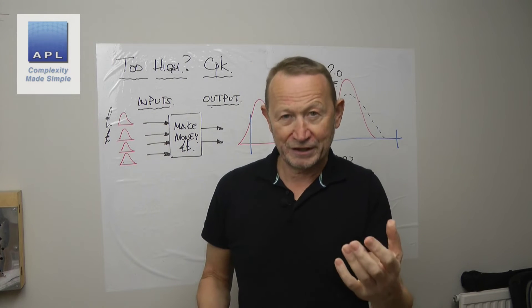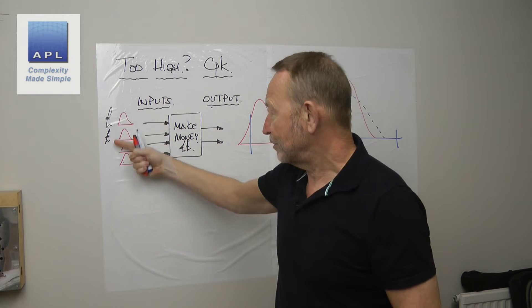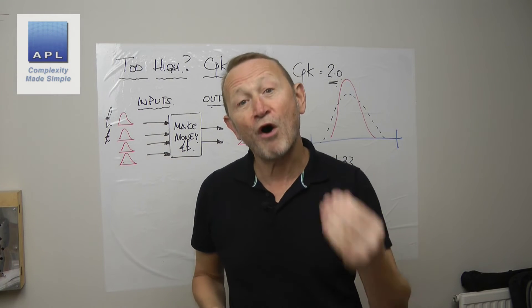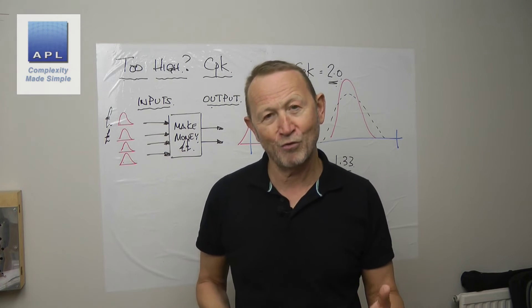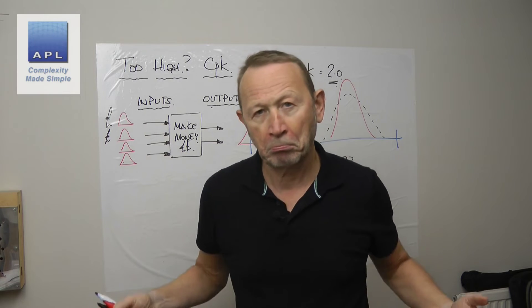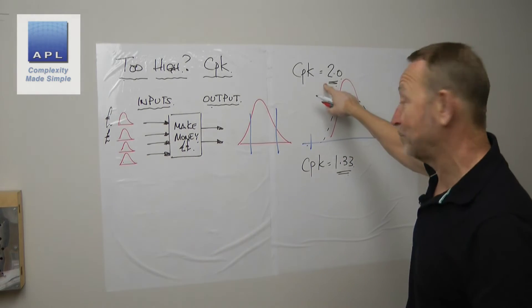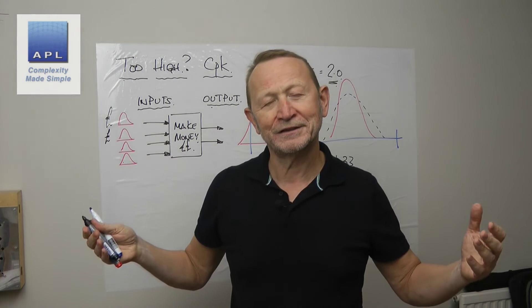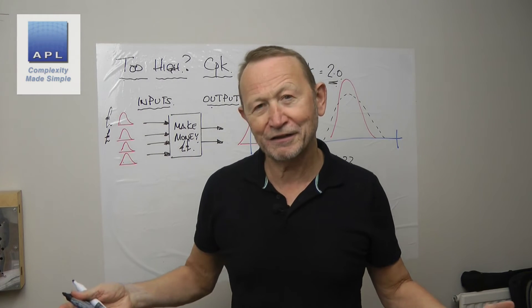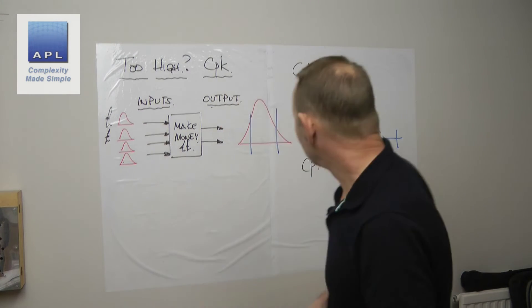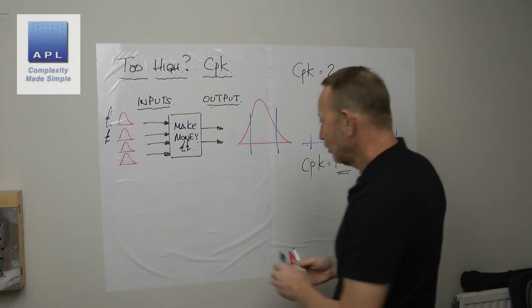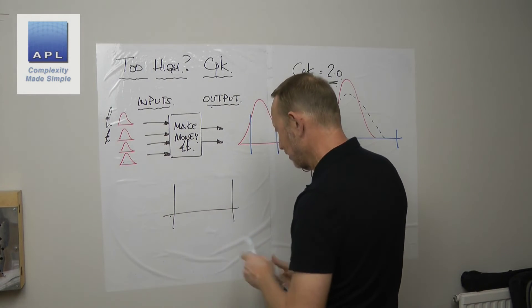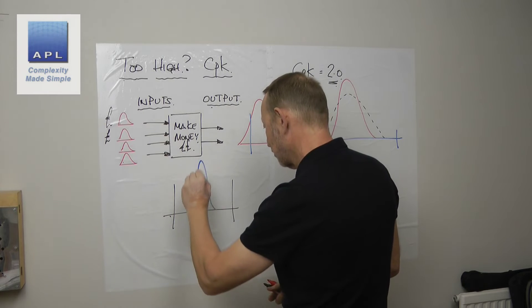But what if you're not spending a fortune on inputs — you're at the cheapest you want to be — and you still get a CPK of two? Is the CPK too high? Not really, no. They do say that the more you reduce variability, the cheaper the process becomes.